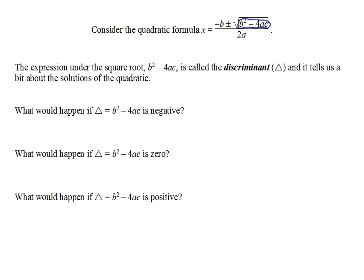This b squared minus 4ac is called the discriminant. We use the Greek letter delta, a little triangle, to represent the discriminant. Our solution to a quadratic equation is negative b plus or minus the square root of the discriminant, all divided by 2a. When using the quadratic formula, it can actually become a good habit to work out the discriminant first. Then you'll be able to work out whether you need to go any further. You might find you're not going to have any solutions and you can stop. If you are going to have solutions, you've already done half the calculation and just need to substitute it in.